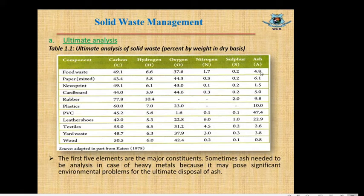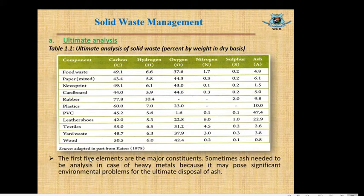Similarly, for paper and other components, summing the six items gives 100% mass. The first five elements are the major constituents. Sometimes, ash needs to be analyzed for heavy metals because it may pose significant environmental problems for the ultimate disposal of ash.